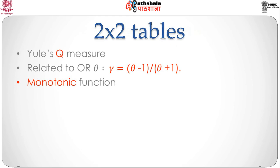For 2 by 2 tables there is a simplification of the gamma measure. In fact, gamma for the 2 by 2 case is also referred to as Yule's Q and it is related to the odds ratio. It is possible to show that gamma equals (π_11 π_22 − π_12 π_21) / (π_11 π_22 + π_12 π_21), which can be shown to equal (θ − 1) / (θ + 1), where θ is the odds ratio. Thus gamma is a monotonic function of θ that transforms from the 0-to-infinity scale to the minus 1-to-1 scale.